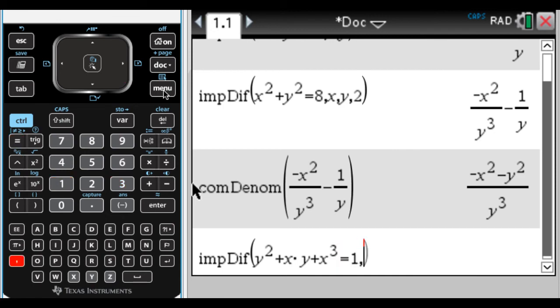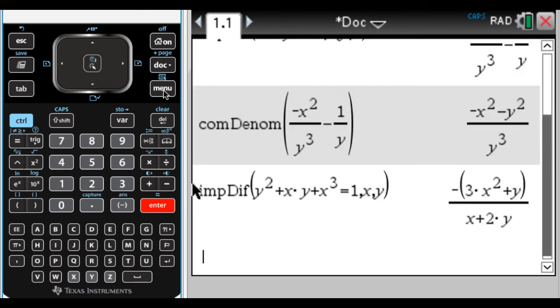and then we'll say it equals 1, comma the independent variable, which is x, comma the dependent variable, which is y. If I don't put a number there, it's going to find the first derivative, which is that.